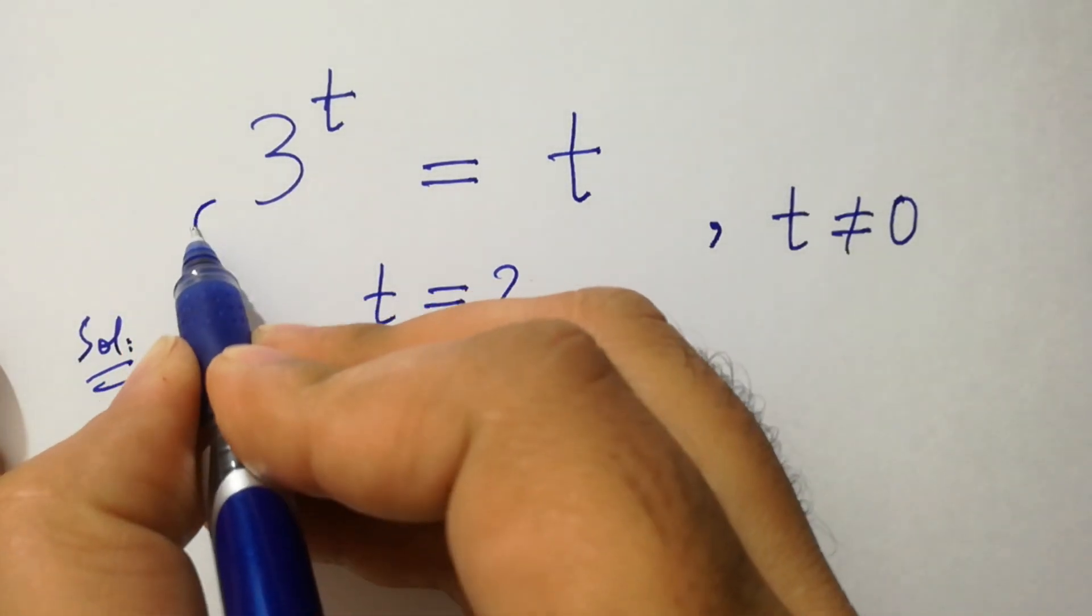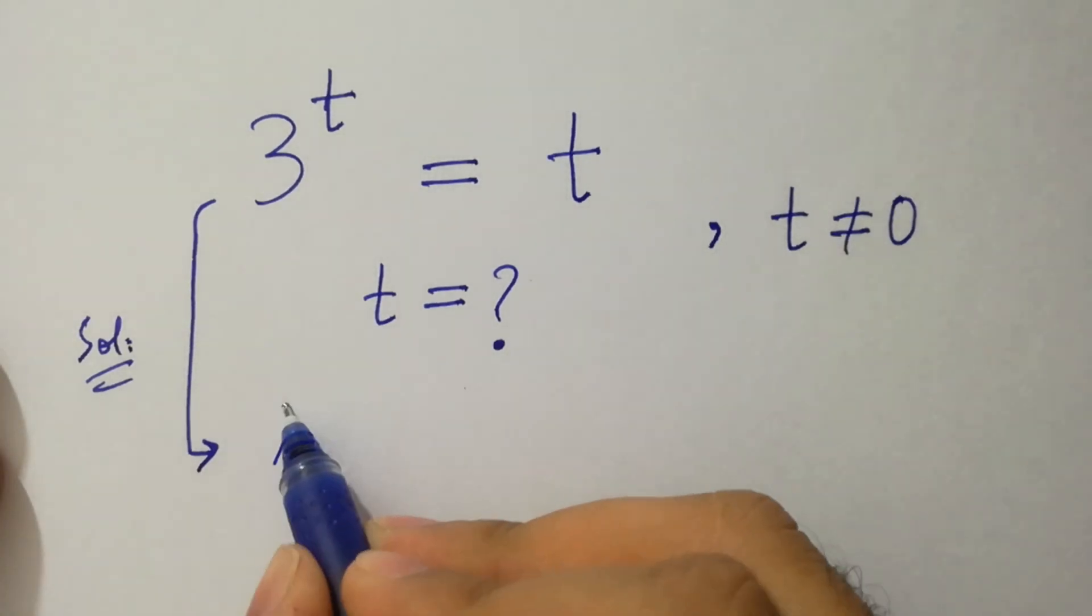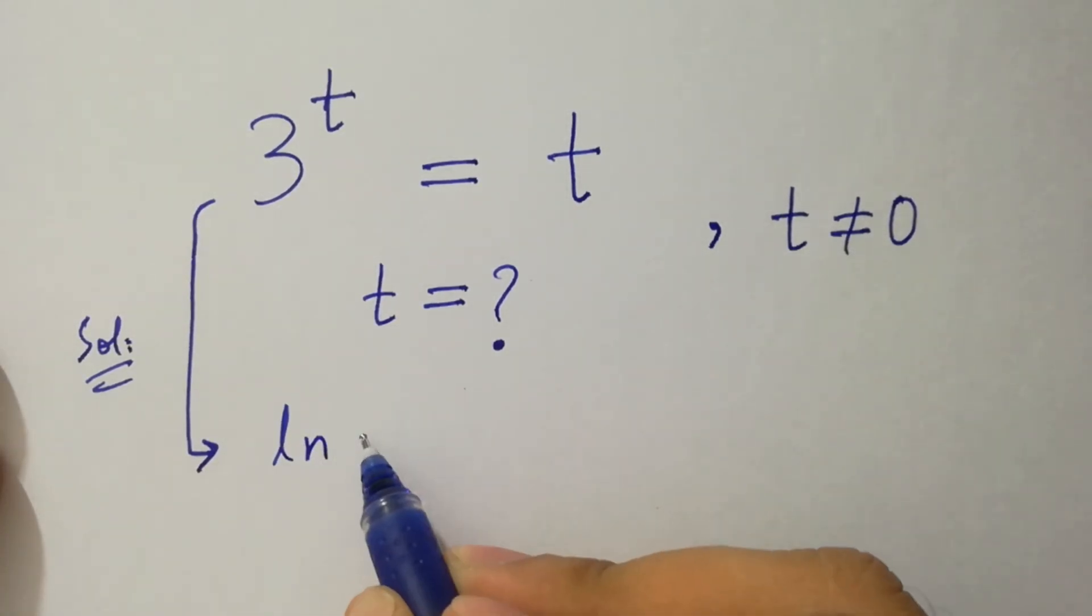To solve this problem, take natural log ln on both sides of this equation.